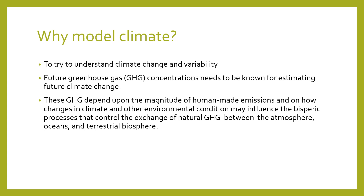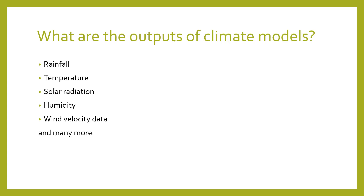Why do we model our climate? First, to try and understand climate change and variability. Second, to estimate future greenhouse gas (GHG) concentrations so we can estimate the future of climate change. GHG concentrations depend on the magnitude of human-made emissions and how changes in climate and other environmental conditions may influence them. The outputs of climate models include rainfall, temperature, solar radiation, humidity, wind velocity, pressure, and many other climate parameters.